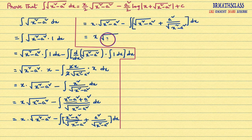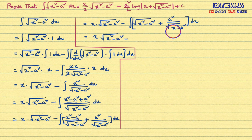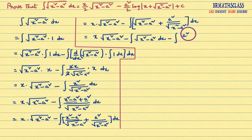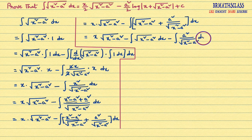So this becomes: x into root over x square minus a square minus integral of root over x square minus a square dx, minus of plus is minus, integral of a square divided by root over x square minus a square dx.